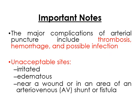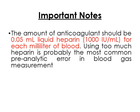Important notes: major complications include thrombosis, hemorrhage, and possible infection. Unacceptable sites include those that are irritated, edematous, near a wound, or near a fistula. The amount of anticoagulant should be 0.05 mL of liquid heparin for each milliliter of blood — please remember that. The modified Allen test to determine ulnar collateral circulation should be performed prior to arterial puncture.